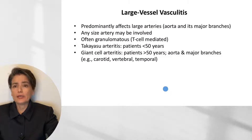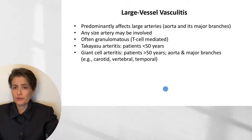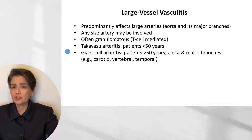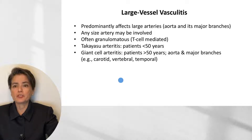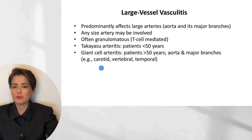Looking at large vessel vasculitides: while they predominantly affect large arteries — the aorta and its major branches — any size artery may be involved. This is often granulomatous, T-cell-mediated inflammation. The two types are Takayasu arteritis, in which patients are less than 50 years old, and giant cell arteritis, in which patients are greater than 50 years old. Giant cell arteritis predominantly affects the aorta and its major branches, particularly the carotid, vertebral, and temporal arteries.